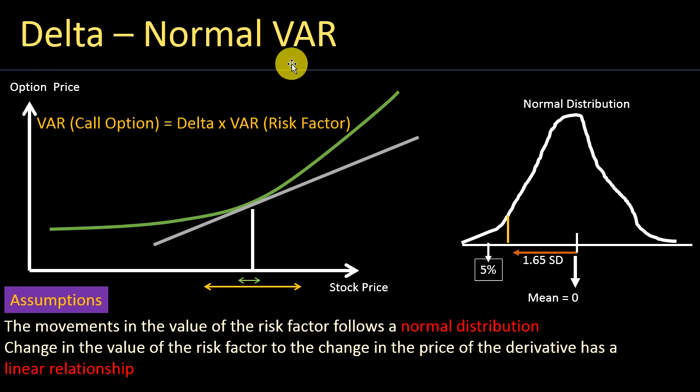We are going to have a quick look at how to calculate value at risk using the delta normal approach. When we use the delta normal approach we make some very strong assumptions which are not true in reality. This is one of the reasons why, even though the delta normal approach is one of the simplest ways to calculate value at risk and some textbooks say it's the most popular method, in reality most large financial institutions do not use it.